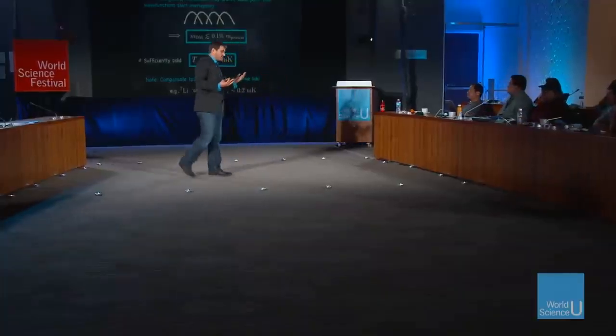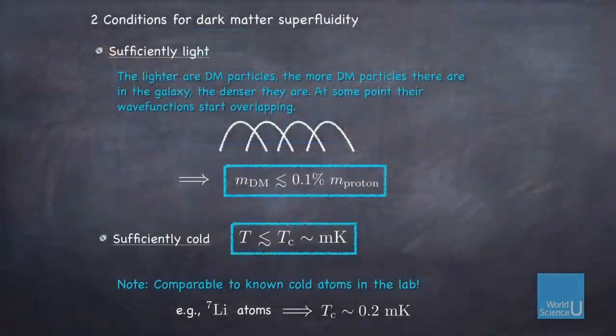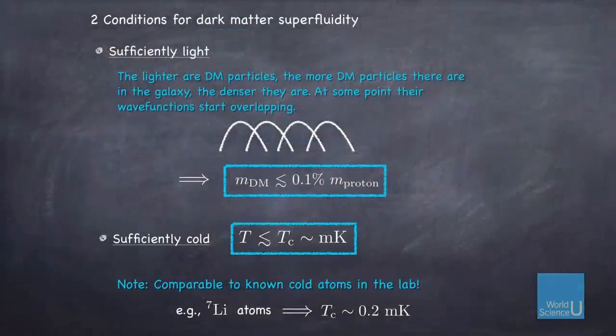If you work out what the critical temperature for transition to superfluid state for dark matter would be, it turns out to be millikelvin. That's interesting because in the laboratory with cold atom systems, millikelvin is a reasonable number. With lithium atoms, the critical temperature is 0.2 millikelvin. It's another hint that maybe these things are actually some kind of dark atoms — not made of ordinary matter, but some form of dark matter atom.